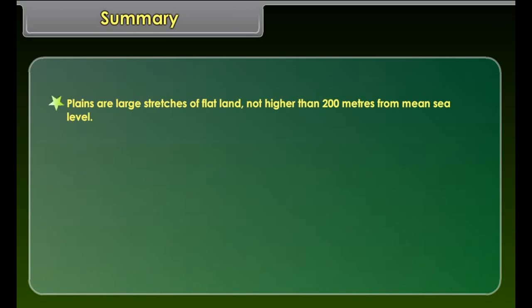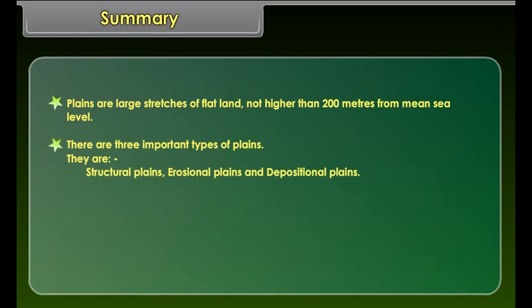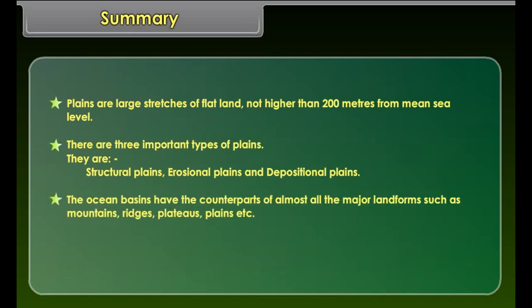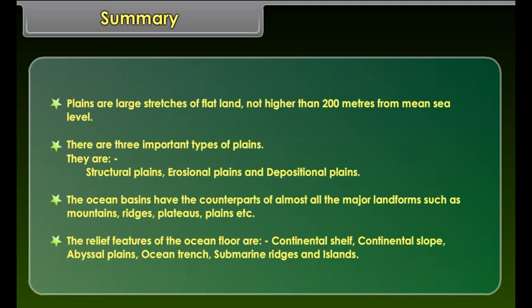Plateaus are flat-topped table land with steep slopes on one or more sides. On the basis of geographical location and structure, they are divided into continental plateau, intermontane plateau, and piedmont plateau. Plains are large stretches of flat land, not higher than 200 meters from mean sea level. There are three important types of plains: structural plains, erosional plains, and depositional plains. The ocean basins have counterparts of all major landforms, and the relief features of the ocean floor include continental shelf, continental slope, abyssal plain, ocean trench, submarine ridges, and islands.